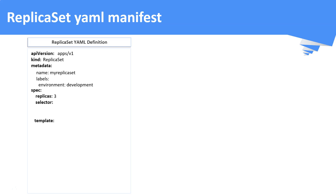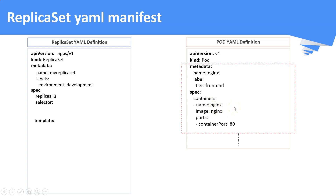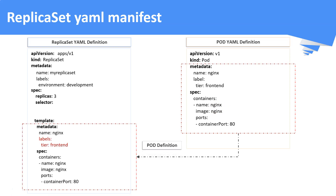As per this definition, the number of replicas is three. We will discuss the selector field last. Under the template section, we need to mention the pod definition. We can refer back to our pod definition file discussed in previous lectures. That pod definition, once applied in the Kubernetes cluster, will create a single container pod with an nginx image. This part of the pod definition goes into the template section of the replica set. You can modify these attributes as per your business requirements.